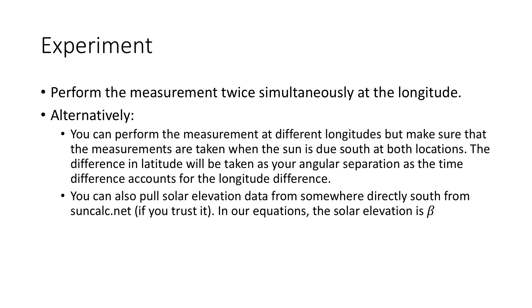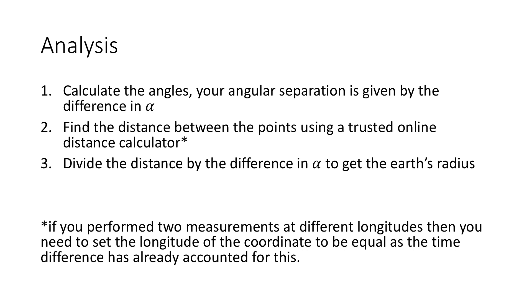The analysis is simple. You calculate the angle alpha for all the measurements, and the difference in alpha is your angular separation. Note that if you use suncalc.net, alpha is 90 minus the solar inclination. You then take a trusted distance calculator and get the distance between the two points. You divide the distance by the angular separation to get the earth's radius.